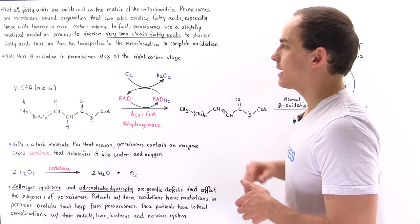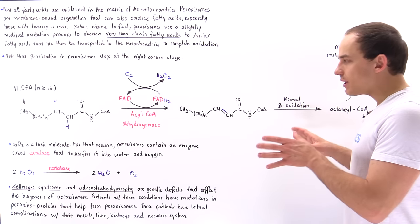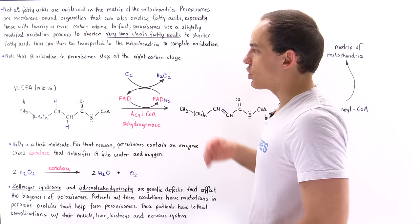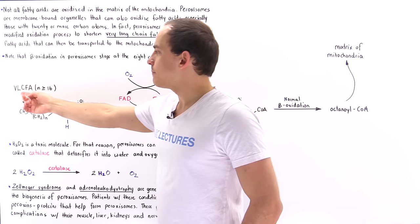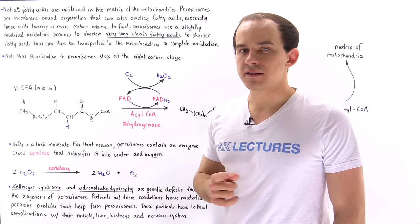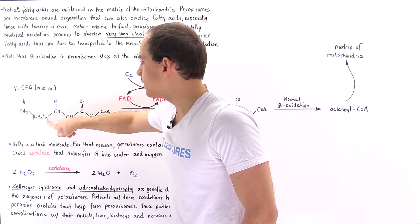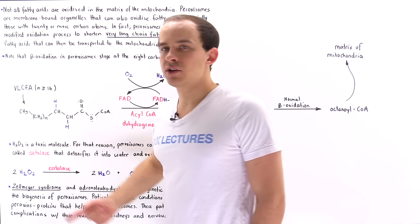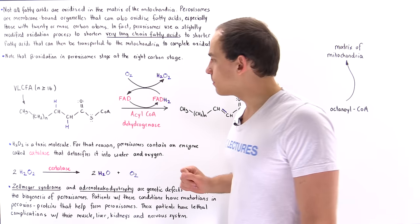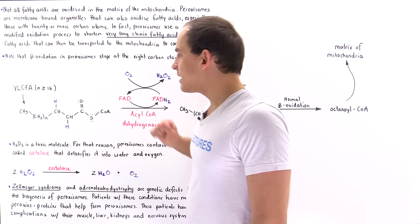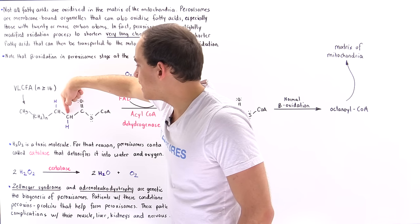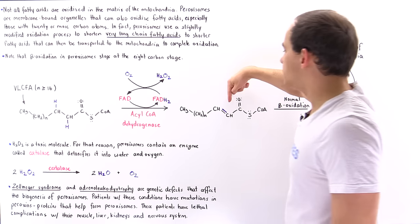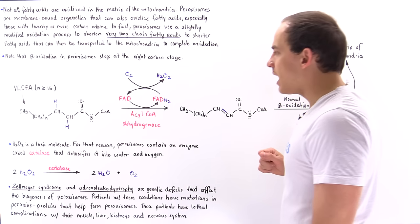Now what about inside the peroxisomes? Inside the peroxisomes, it's this step that takes place. Let's suppose we have some type of very long chain fatty acid, so our n value here is 16 or greater so that this entire molecule contains at least 20 carbon atoms. In step one, we transform this single bond between carbon number two and three into a double bond, and at the same time, we reduce the FAD molecule into an FADH2 molecule.